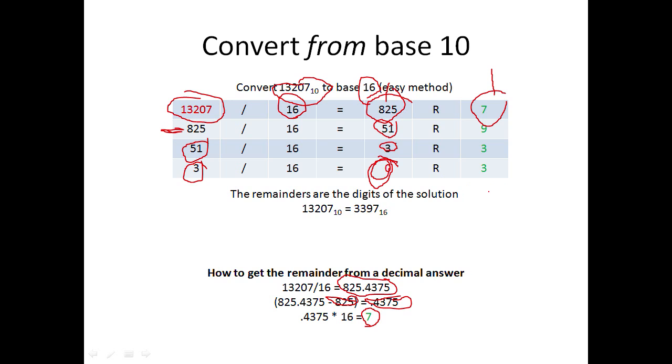Now you have all the remainders. The last remainder is the first digit of your result. Reading the remainders backwards: 3, 3, 9, 7 is your result. So 13207 base 10 equals 3397 base 16. And that's how you do that.